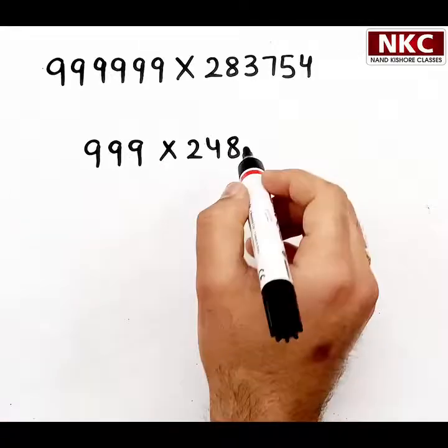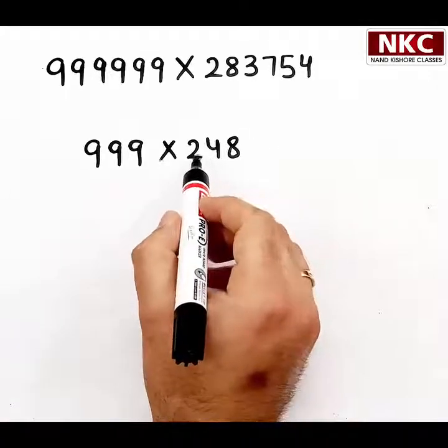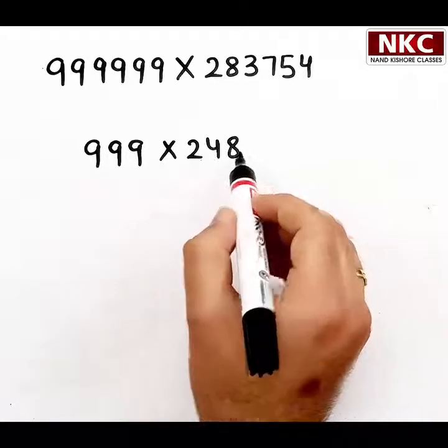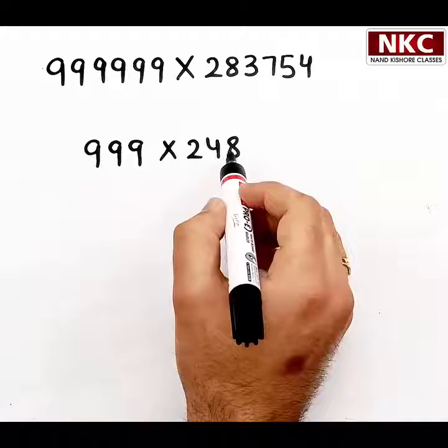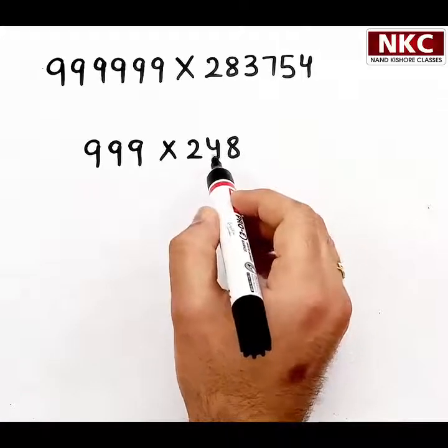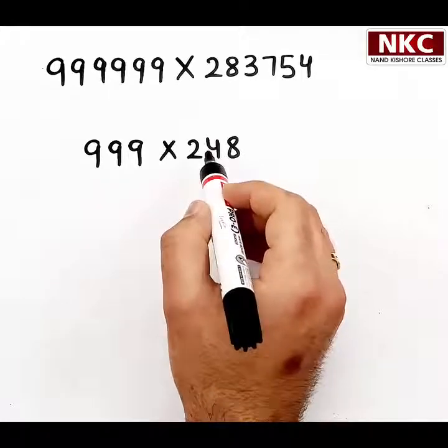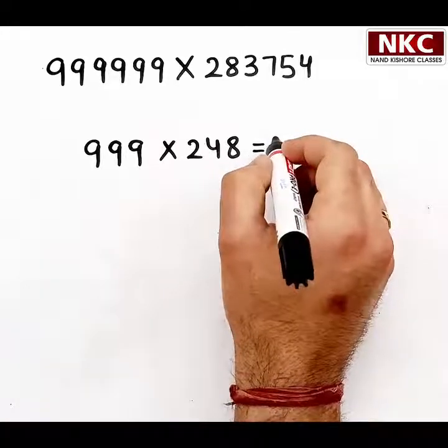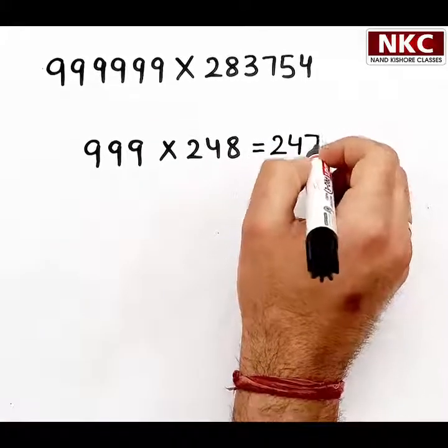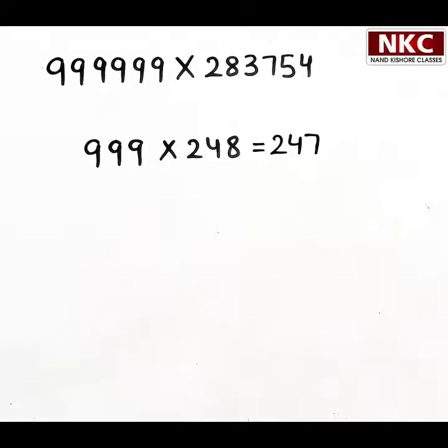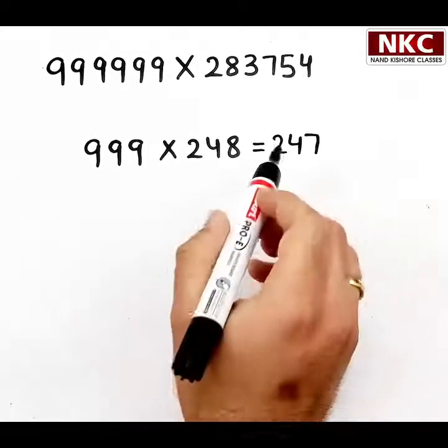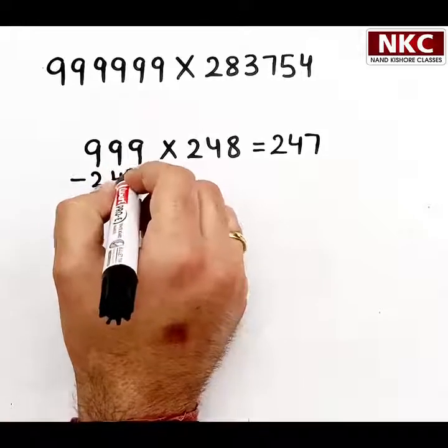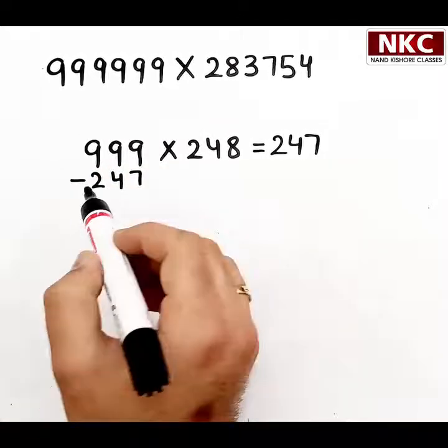First of all, what we need to do: the rule is you are multiplying 999 with 248. Subtract 1 from 248, or you can take one number less than 248, which is 247. I'm writing 247. Now, this 247 needs to be subtracted from here. Let us subtract.